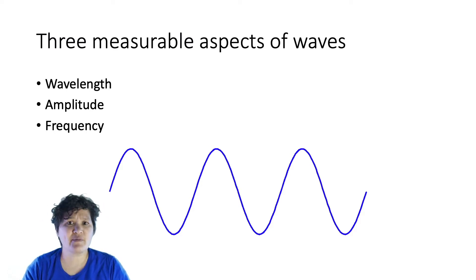We tend to talk about three measurable aspects of light as a wave, which are first, wavelength, the distance from the peak of one wave to the peak of the next wave. Second, amplitude, which is how tall the wave is, or the distance from the peak of one wave to the trough of that same wave. And finally, frequency.